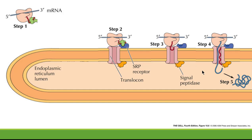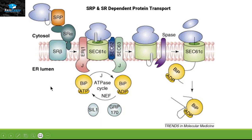Let's take a closer look at this process to recognize which type of translocon is present on the ER and how it pulls the protein inside the lumen. This picture shows the details of the translocon present on the ER. The blue bubble represents the ribosome, and this is the protein coming out of the ribosome with the signal sequence. The signal sequence is recognized by SRP — the signal recognition particle — which then attaches itself with the SRP receptor. The SRP receptor has two domains: one called SR alpha and one called SR beta.